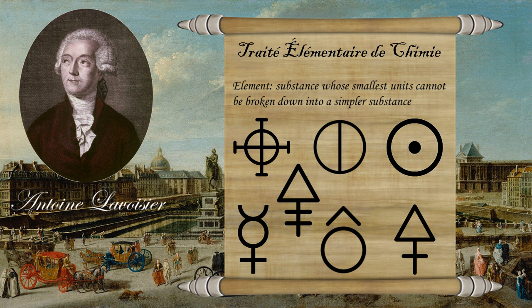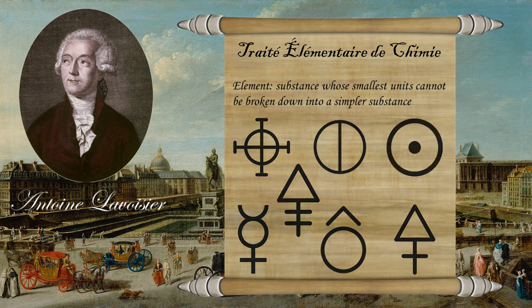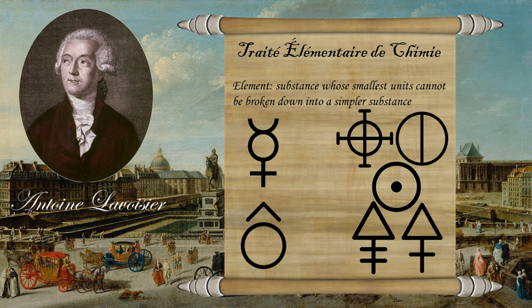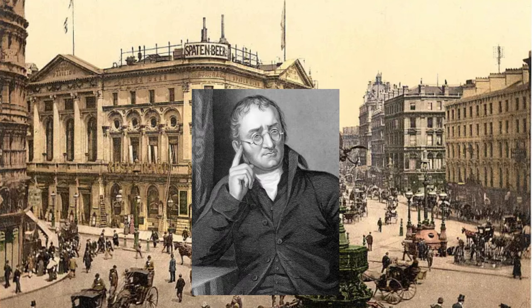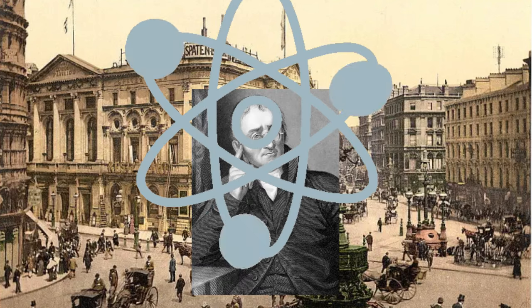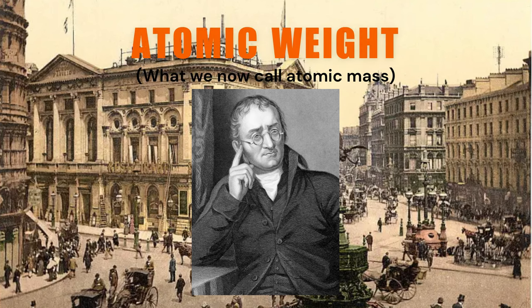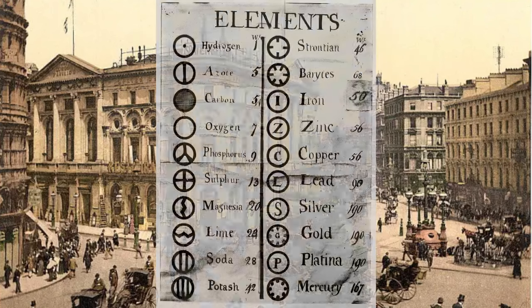He also added heat and light as elements, but let's not talk about that. And he also divided them into metals and non-metals. In the beginning of the 19th century, John Dalton—yeah, the same guy that discovered atoms—came up with the term of atomic weight, and made a table to group elements by that value.